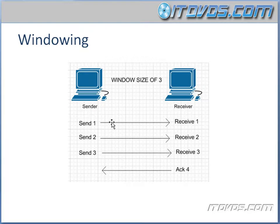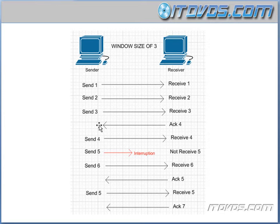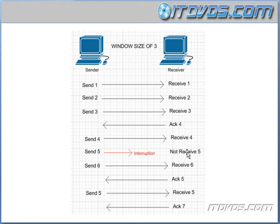You can see how the lower the window size, the more overhead you're going to have, because more acknowledgments will be sent back from the receiver to the sender. Now let's see what happens when a segment isn't received. With a window size of three, the sender sends segments one, two, and three. The receiver receives them all and sends back ACK four. So the sender sends four, five, and six. But let's say segment number five has an interruption — it is not received.